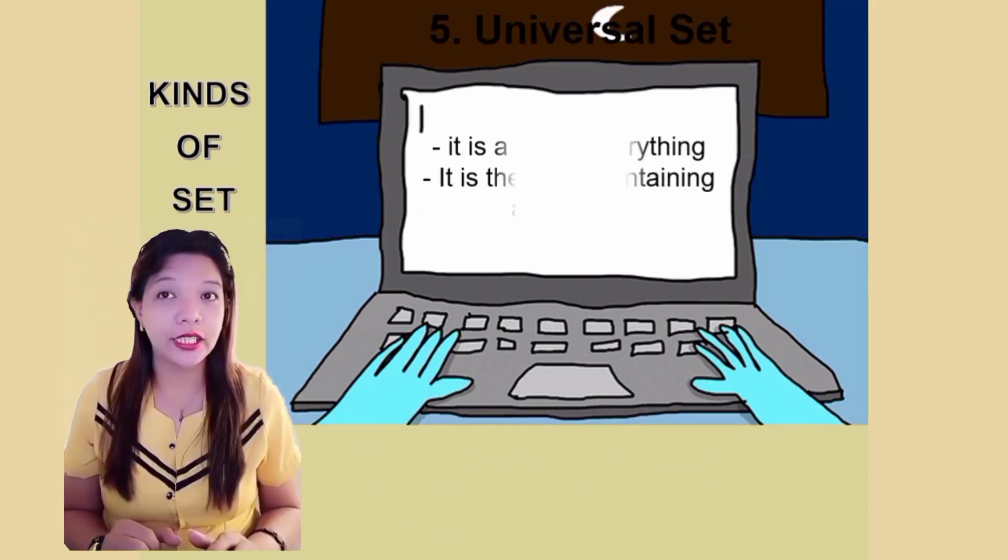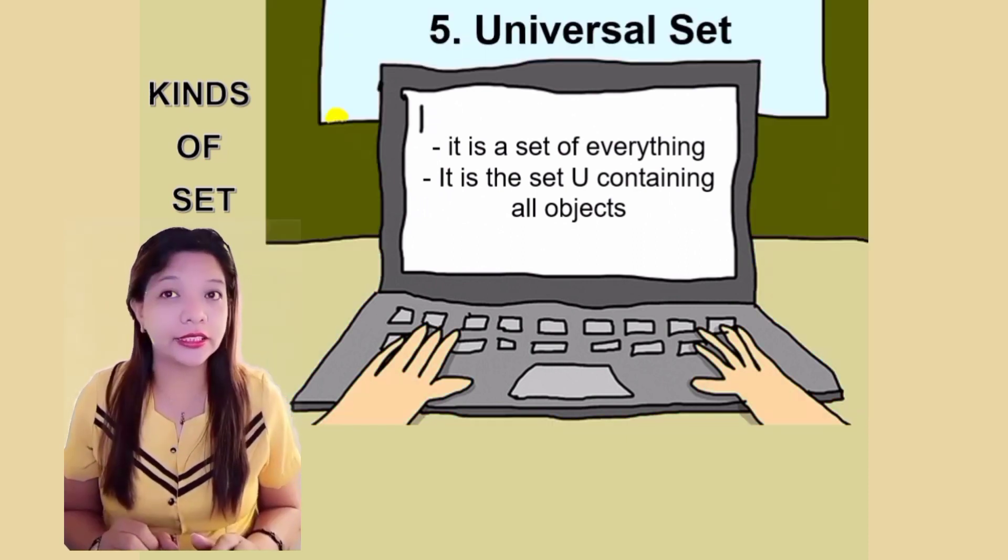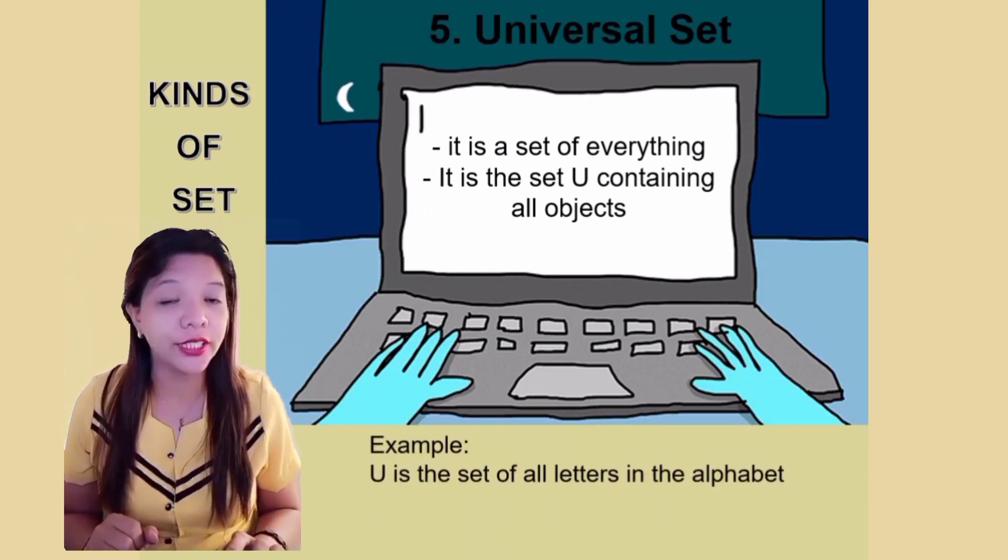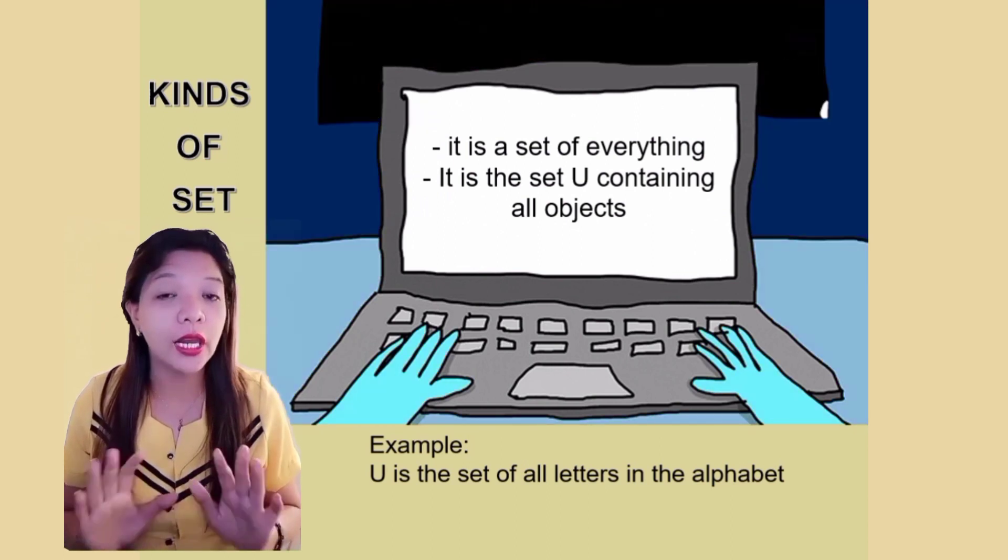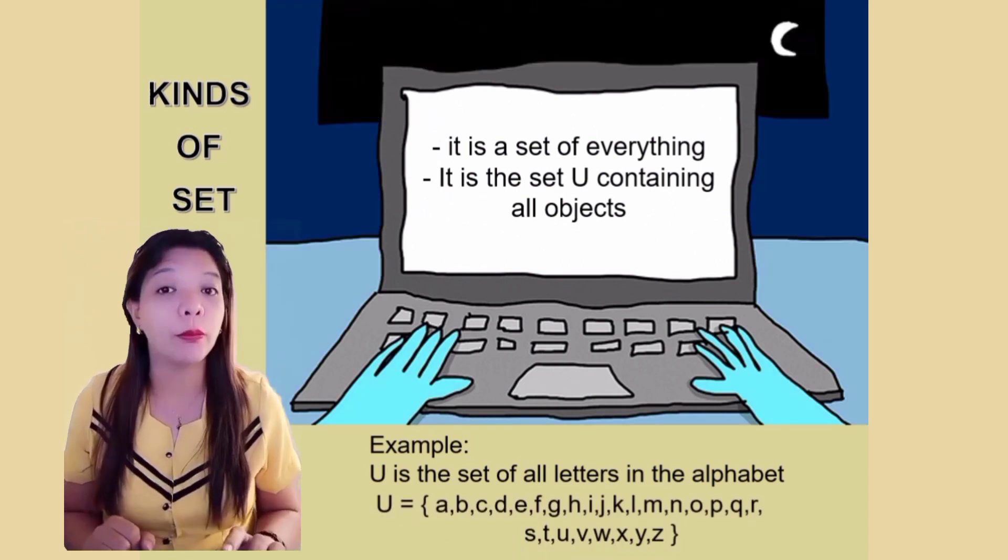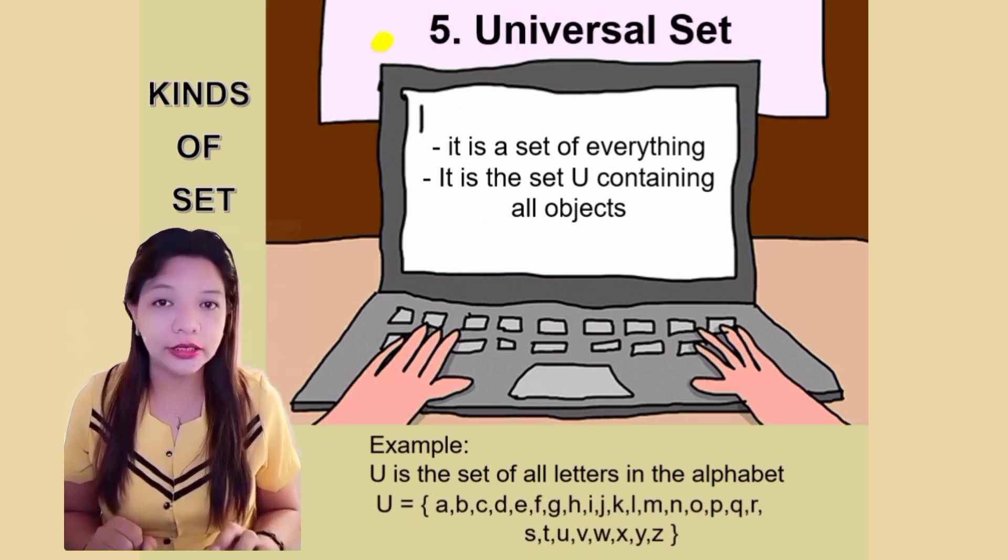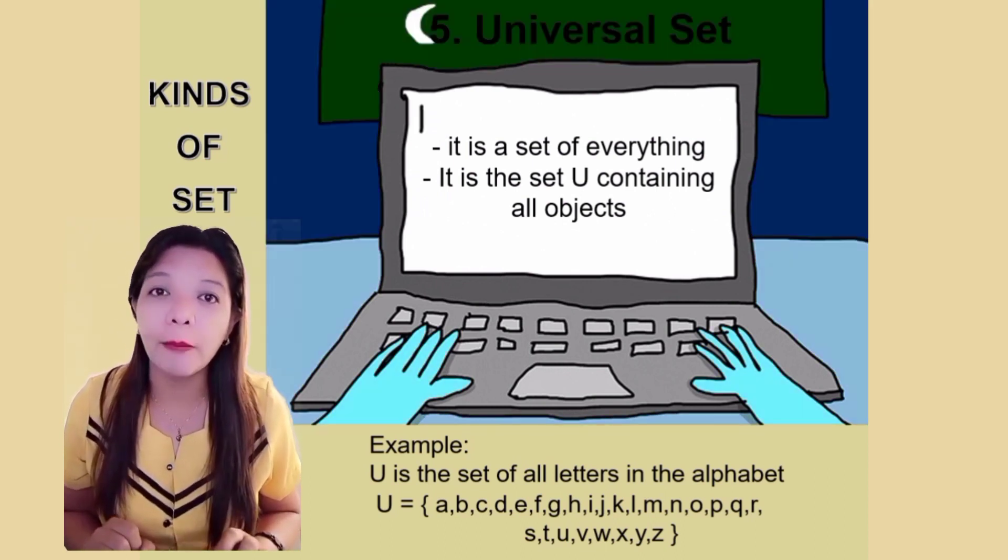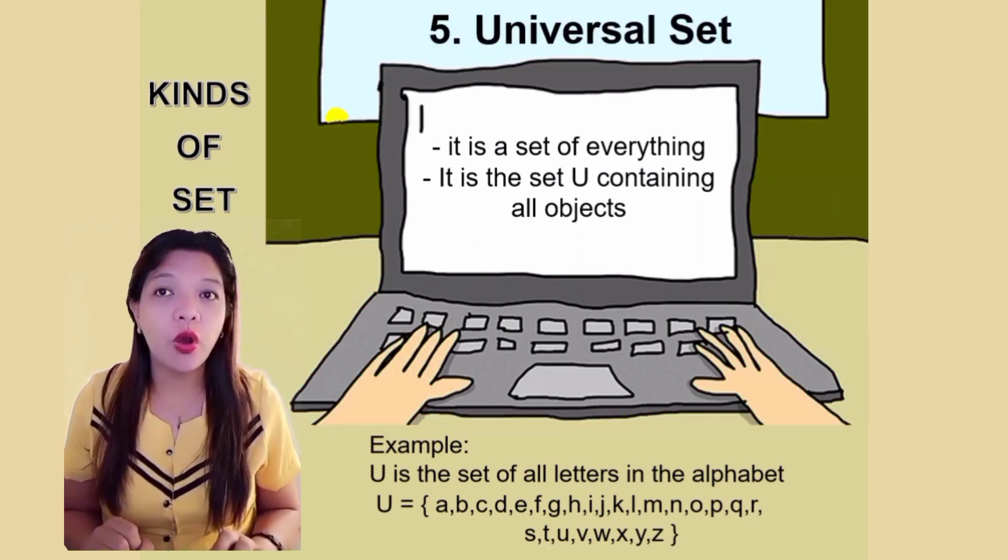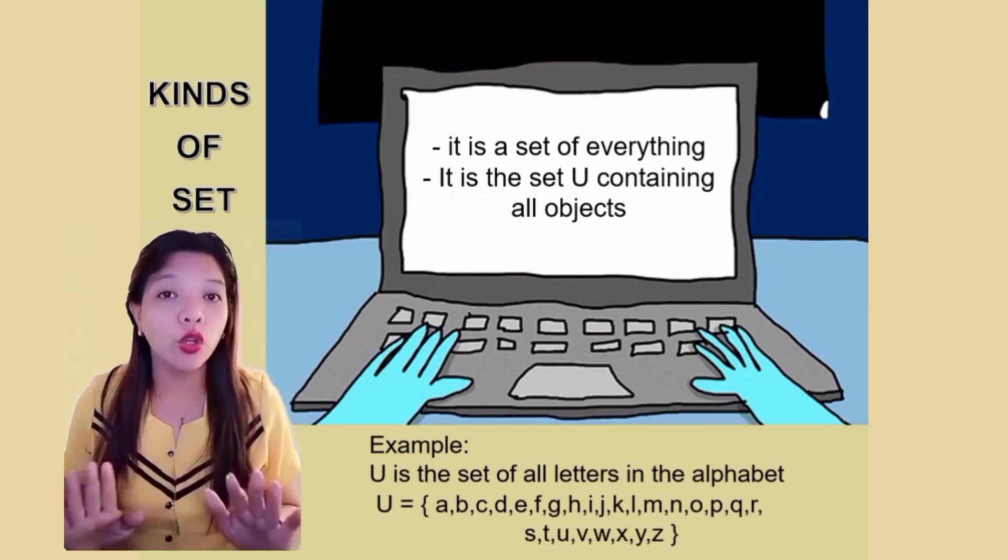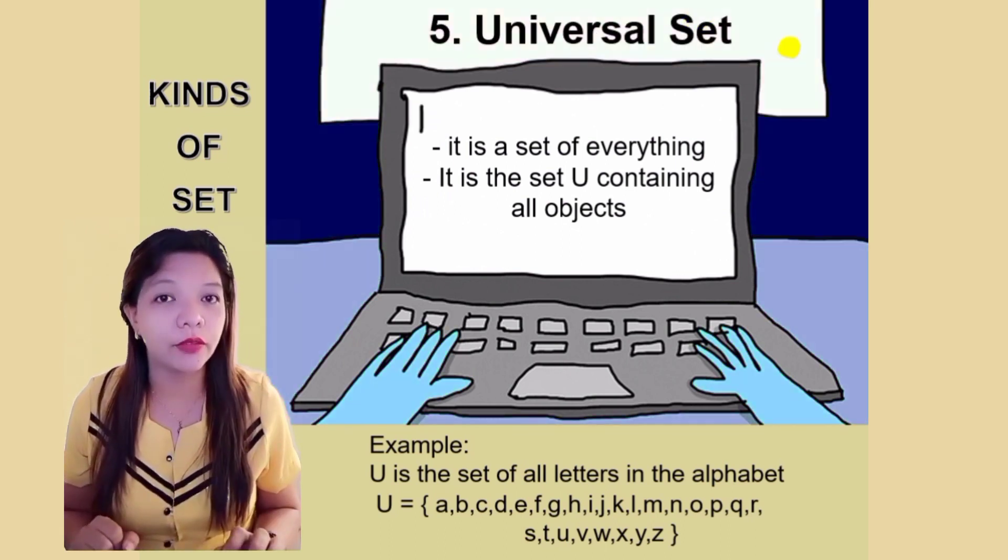Kinds of set number five. Universal set. It is a set of everything. It is a set U containing all objects. Example, U is the set of all letters in the alphabet. So we will name all the elements or all the letters in the alphabet. U is equal to open brace A, B, C, D, E, F, G, H, I, J, K, L, M, N, O, P, Q, R, S, C, U, B, W, X, Y, Z, close brace. Meaning, all the letters in the alphabet. Universal set.